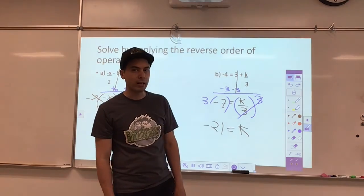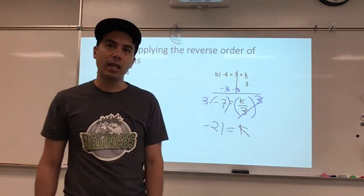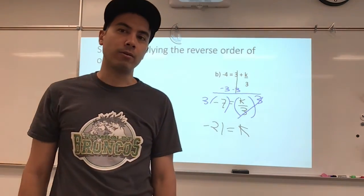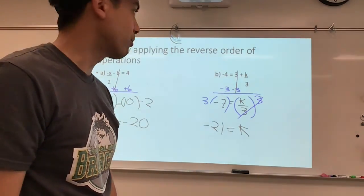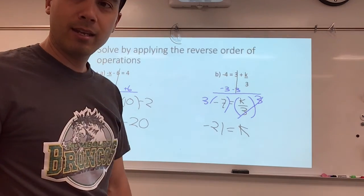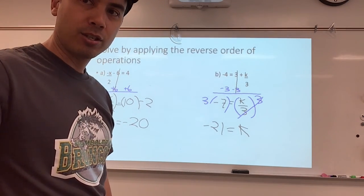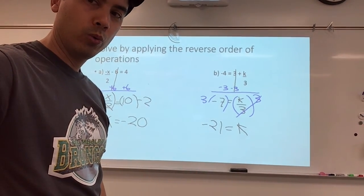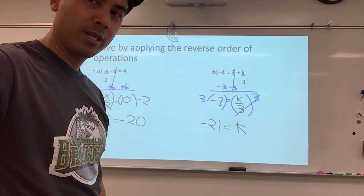Negative 21 divided by 3 is negative 7, and 3 plus negative 7 is negative 4. The left-hand side equals the right-hand side — looks like I did it right! And that's it, take care everybody.